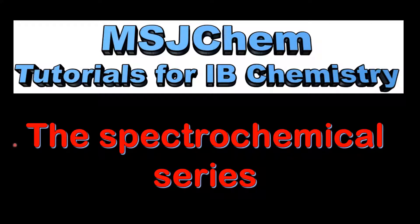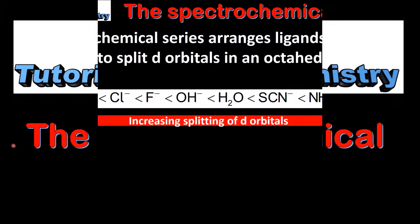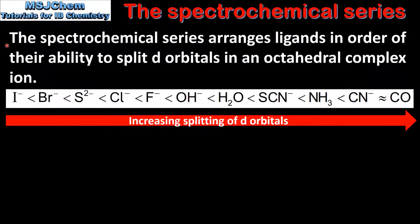This is MSJChem. In this video I'll be looking at the spectrochemical series. The spectrochemical series arranges ligands in order of their ability to split d orbitals in an octahedral complex ion. Here we can see the spectrochemical series which ranges from the iodide ion up to carbon monoxide.